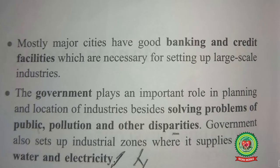Mostly major cities have good banking and credit facilities, which are necessary for setting up large-scale industries. The government plays an important role in planning and location of industries, besides solving problems of pollution and other disparities — meaning other problems. The government also sets up industrial zones where it supplies land, water and electricity.